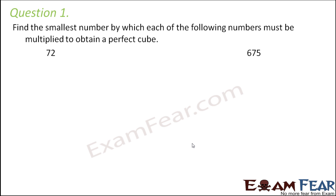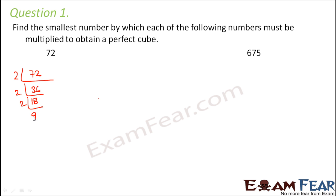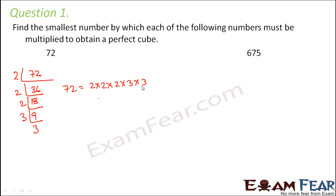Find the smallest number by which each of the following numbers must be multiplied to obtain a perfect cube. We are given two numbers: 72 and 675. Let's start with the first number. Our first step is to do prime factorization. So 72 is completely divisible by 2: 2 into 36, again 2 into 18, 2 nines are 18, then 3 threes are 9. So 72 can be written as 2 × 2 × 2 × 3 × 3. Dividing into groups of 3, 2 appears 3 times but 3 appears only 2 times, so this can be written as 2 cubed into 3 × 3.